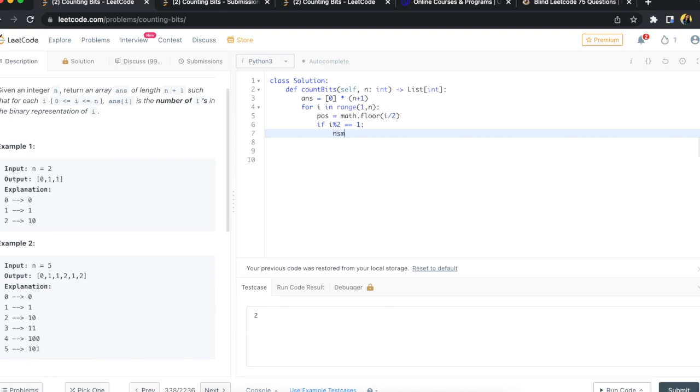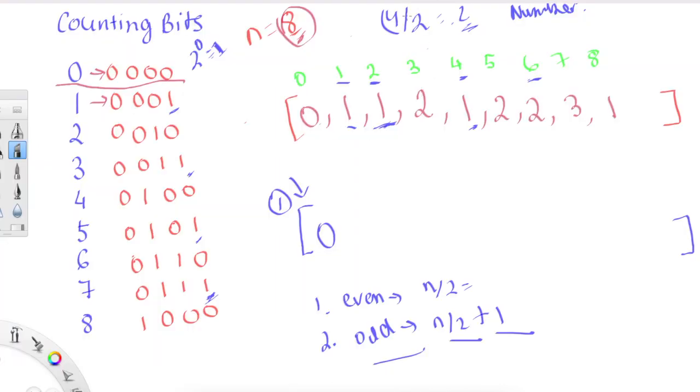We'll say if i mod 2 is equal to 1, that means this is odd. If i mod 2 equals 1, then what we need to do is in our answer list, at that index, we're going to get that position that is before - the half position of it.